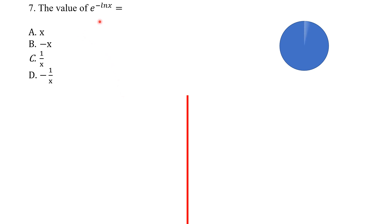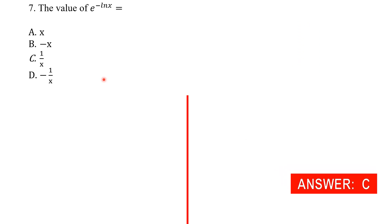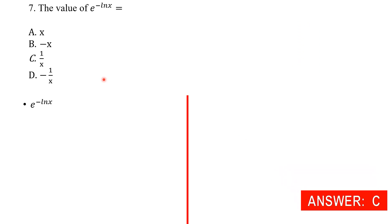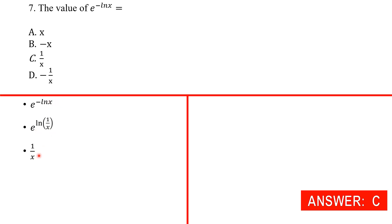The value of e raised to the power (−ln x): this equals e raised to ln(1/x), because the negative moves the x into the denominator. Then since e^(ln a) = a, we get e^(ln(1/x)) = 1/x. So the answer is 1/x.